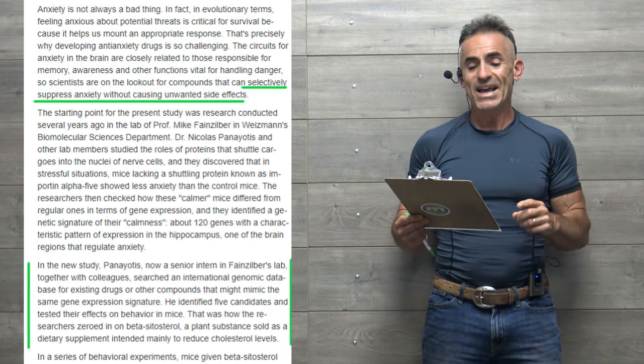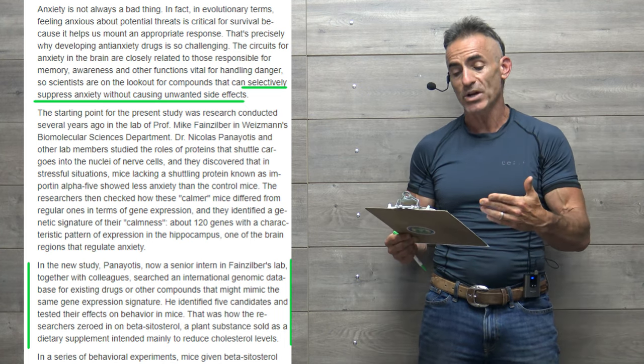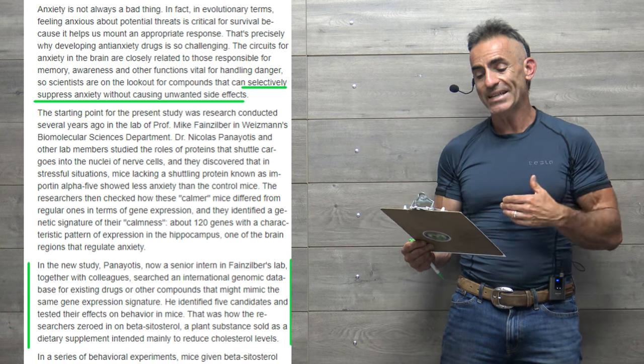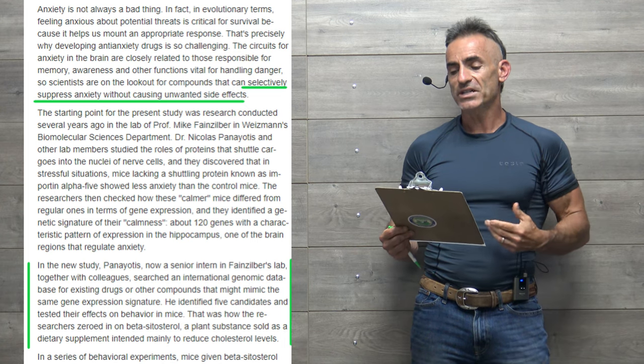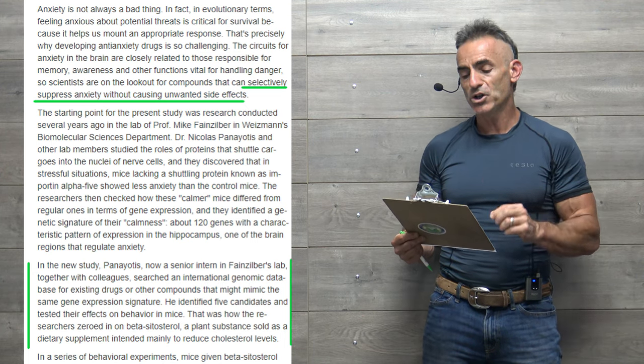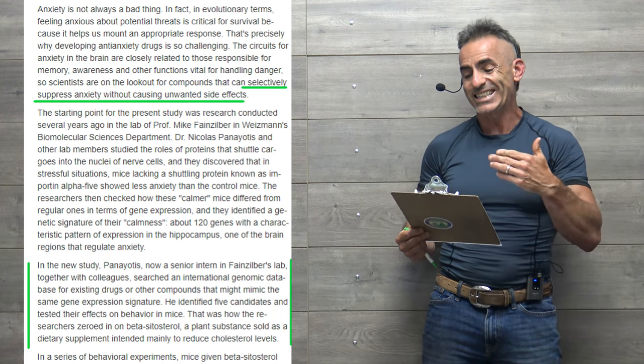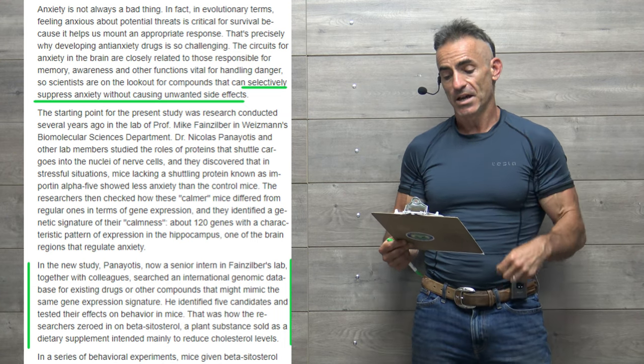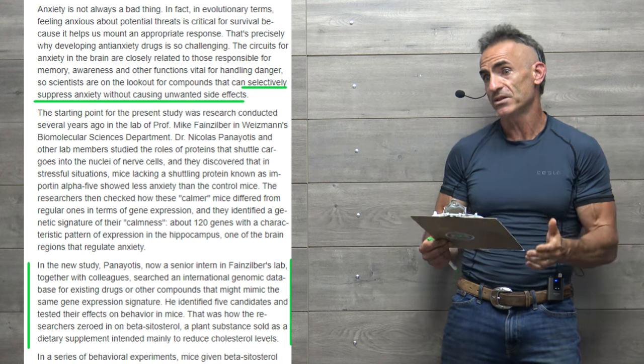So keep in mind this is a dual study: one, reducing the dosaging required on antidepressants while relieving anxiety, and two, as a standalone to take beta-sitosterol on its own. Anxiety is not always a bad thing. In fact, in evolutionary terms, feeling anxious about potential threats is critical for survival because it helps us mount an appropriate response. That's precisely why developing anti-anxiety drugs or in this case food is so challenging. The circuits for anxiety in the brain are closely related to those responsible for memory, awareness, and other functions vital for handling danger. So scientists are on the lookout for compounds that could selectively suppress anxiety without causing those unwanted side effects.